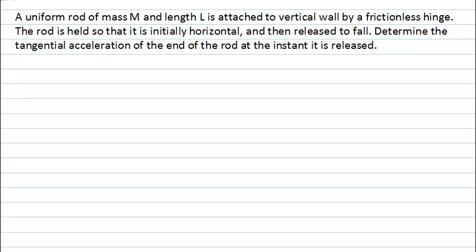The last sentence here wants you to determine a particular property, and it's the tangential acceleration of the end of the rod. And importantly, it's at the instant the rod is released. The information you've been given is the mass of the rod, capital M, the length of the rod, capital L, that is attached to the wall by a hinge, and the rod is initially horizontal. It's also important that our rod is a uniform rod, and we'll see how that becomes important later.